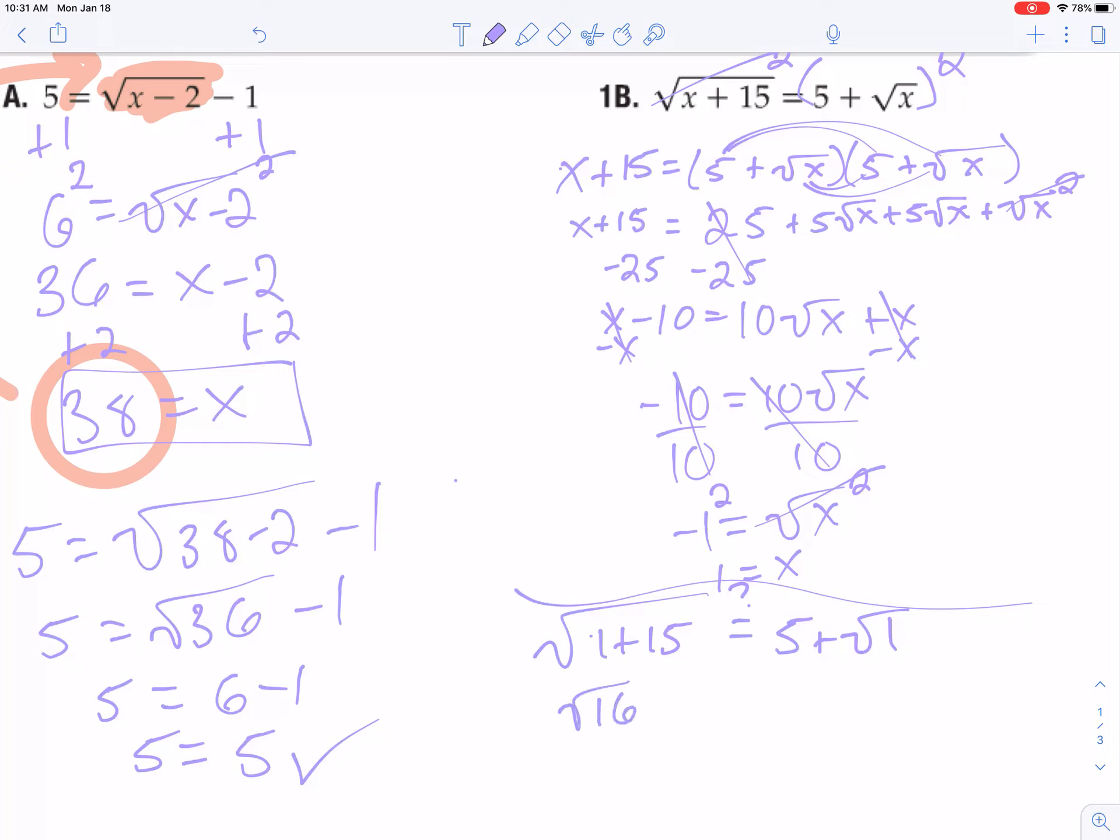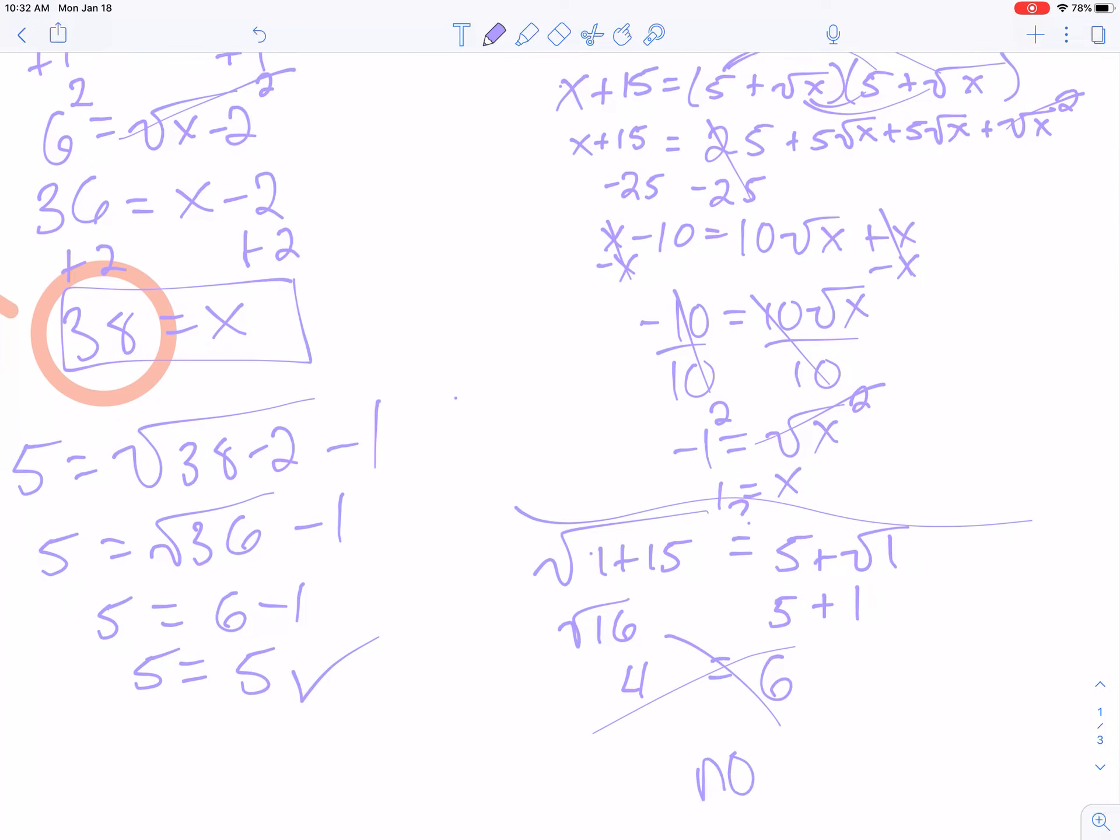Well on the left I have 16, which is just 4 – the square root of 16 is 4. And on the right I have 5 plus the square root of 1 is 1, 5 plus 1 is 6. Those don't equal each other, that's not equal. So this one is no solution.